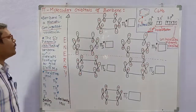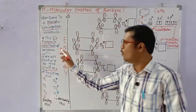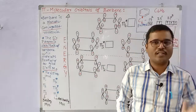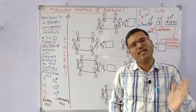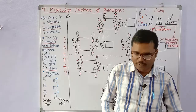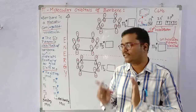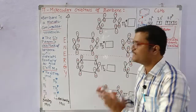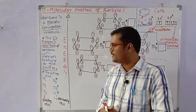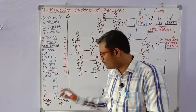The 6p atomic orbitals of benzene overlap partially to give 6 pi molecular orbitals. According to molecular orbital theory, the number of atomic orbitals that overlap gives the same number of molecular orbitals. So 6 atomic orbitals overlap to give 6 molecular orbitals: pi1, pi2, pi3, pi4*, pi5*, and pi6*.